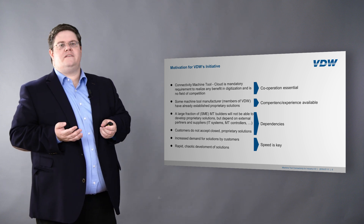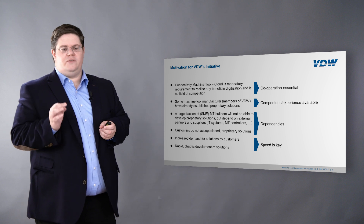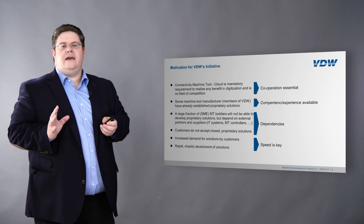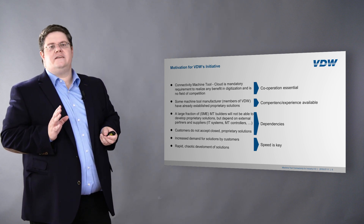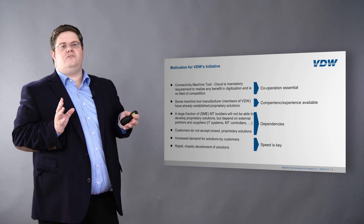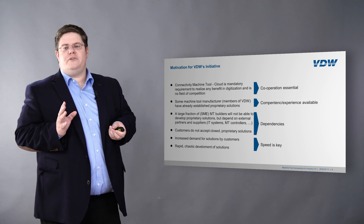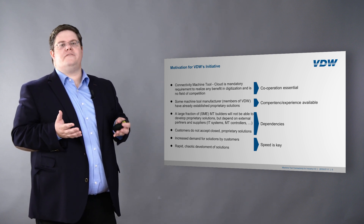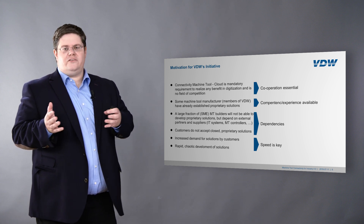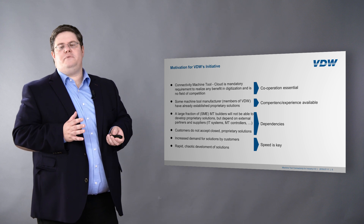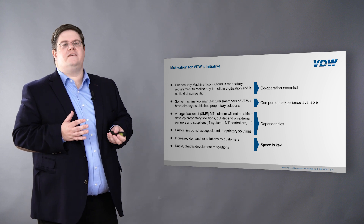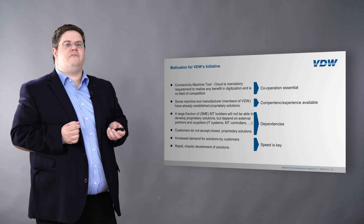To sum that up: cooperation between our industry, our manufacturers, and other industries is essential. Hence, OPC UA is the platform for these discussions. There is already competence and experience available in our member companies that we need to use. We have many dependencies, with more coming, especially since smaller companies cannot afford high investment into software or IT systems development. And speed is key, because the current pace of development requires us to act faster than anyone else who might otherwise set a standard we would simply have to live with.